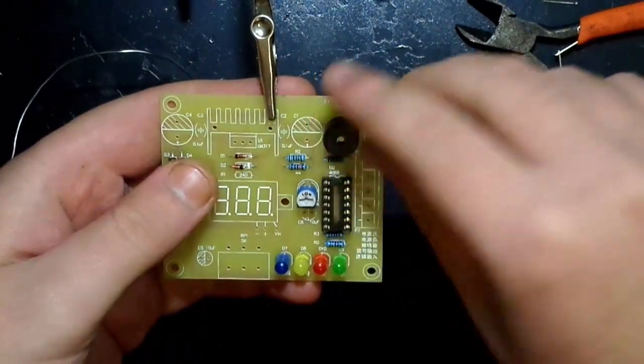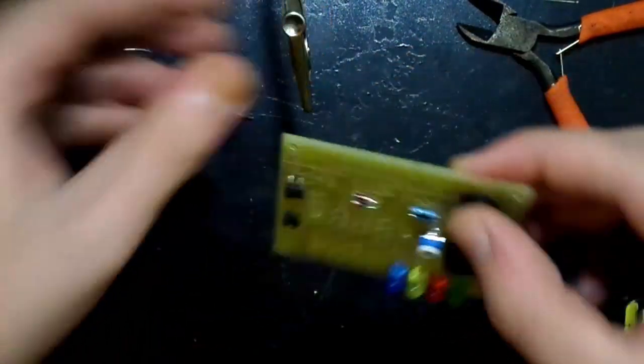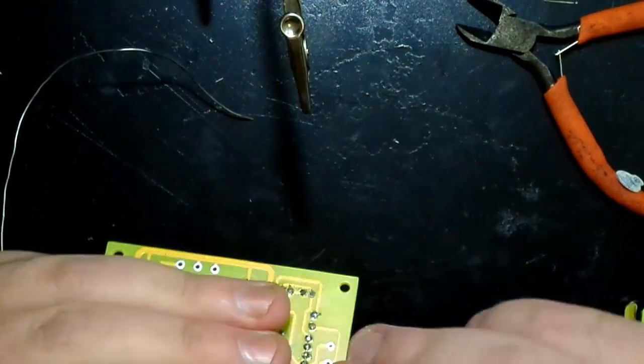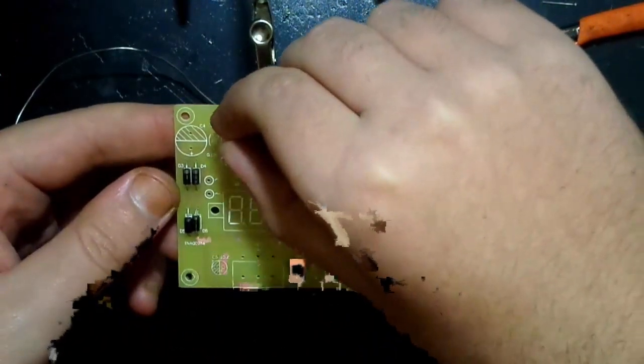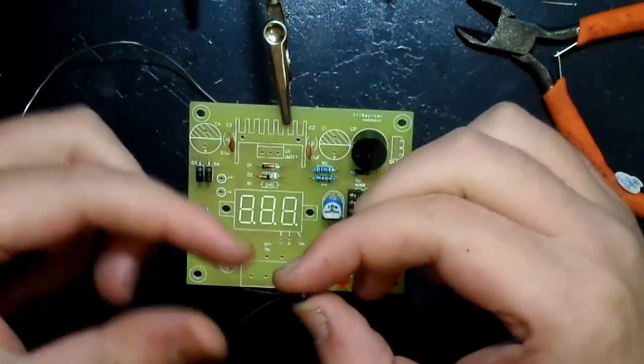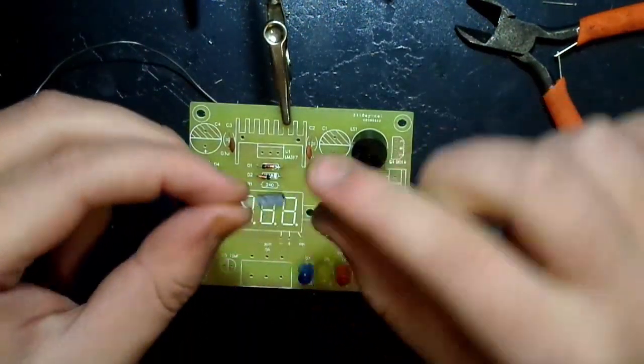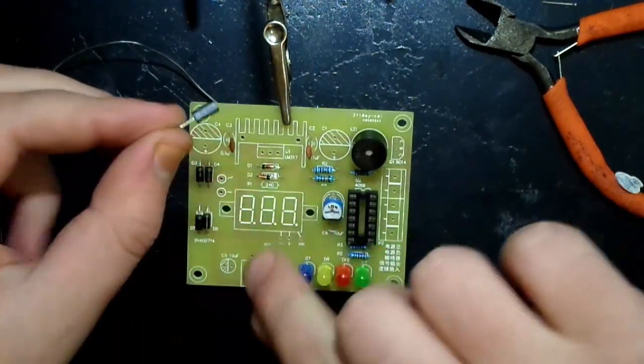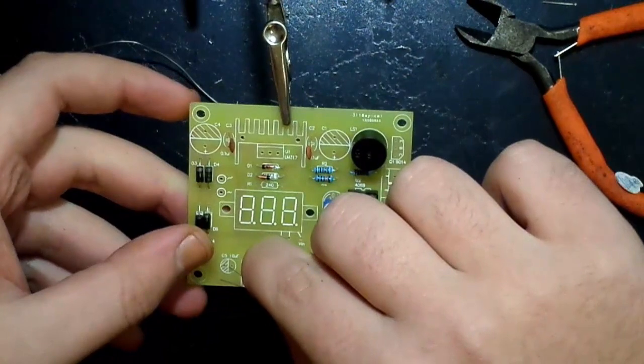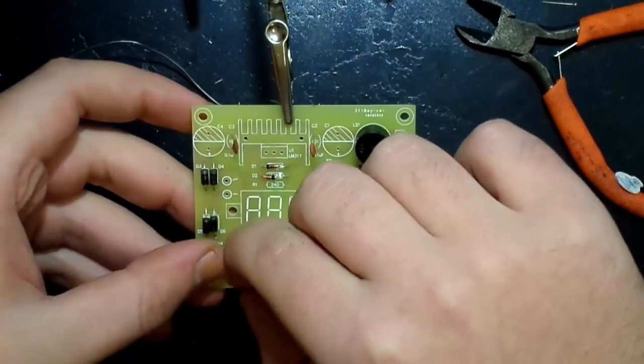Now insert the speaker. The long lead is a positive. The positive is also marked on top when you remove the sticker. Now we insert the ceramic capacitors. You also don't have to worry about polarity. Now we insert the other capacitors. Note that the white strip is negative. There's also a white marking on the board and they must correspond with each other.